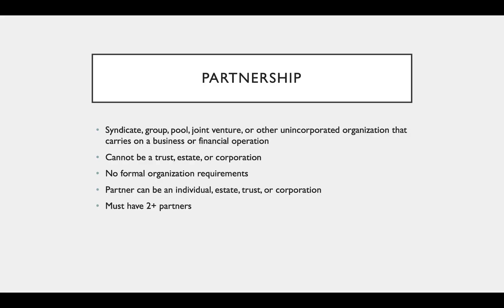A partnership is a syndicate, group, pool, joint venture, or other unincorporated organization that carries on a business or financial operation. It can't be a trust, estate, or corporation. A partnership has no formal organization requirements, so I could go out with a friend and start conducting business and we would be a partnership by virtue of engaging in business with the objective to make money. A partner can be an individual, estate, trust, or corporation. Partnerships must have at least two partners but can have an unlimited number.